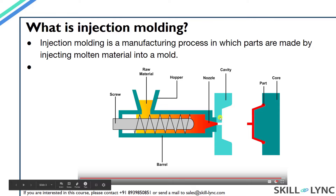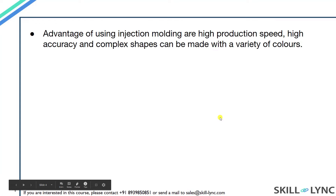There are also many other parts that form part of the injection molding system, which will be discussed in later sessions. There are some distinct advantages of using the injection molding process. First, injection molding can be used to create very detailed and complex geometries with high accuracy. This method is also very fast compared to other methods, allowing for high production rates. It is also possible to add additives to the feed to impart greater strength to the plastic. We can use multiple plastic types simultaneously, and it is possible to automate the entire process, allowing for lower manufacturing costs. Due to these reasons, injection molding is preferred in industries for making plastic parts.